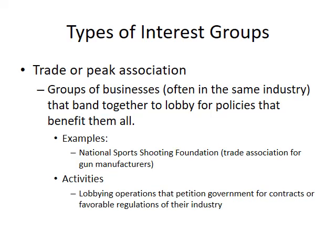The second type of interest group is the trade or peak association — groups of businesses, often in the same industry, that band together to lobby for policies that benefit them all. An example is the National Sports Shooting Foundation, which is the trade association for all gun manufacturers. Their activities include lobbying operations that petition government for contracts or favorable regulations of their industry.